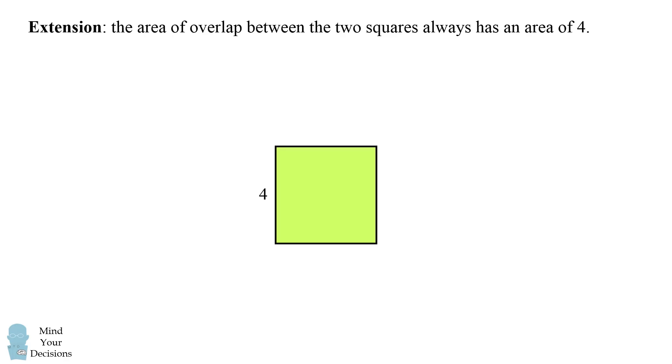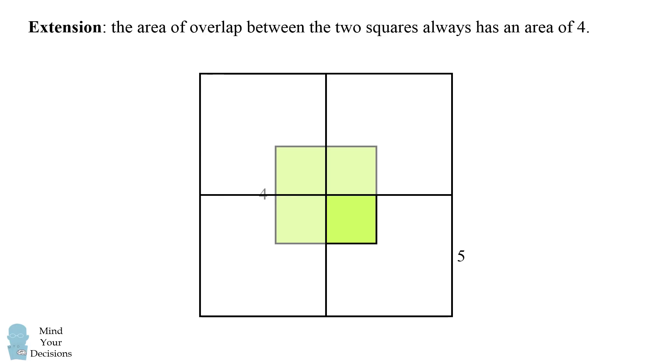So we consider a square with a side length of 4, and then we have a square with a side length of 5. What we'll do is we'll create a tiling where we have four different squares with a side length of 5.